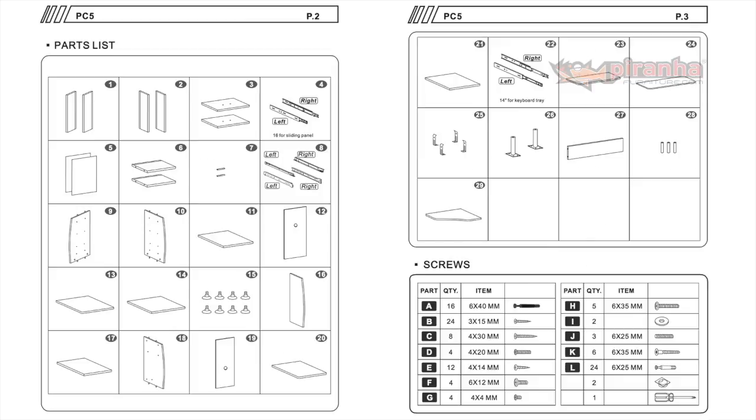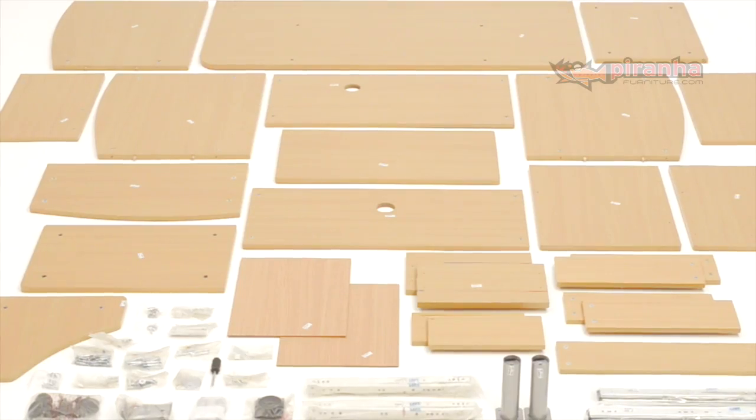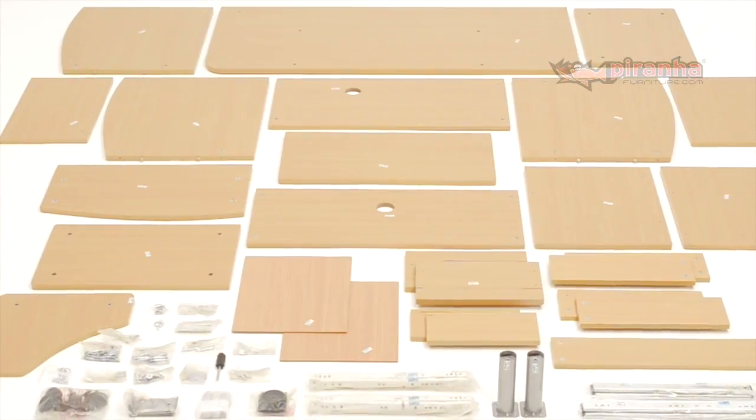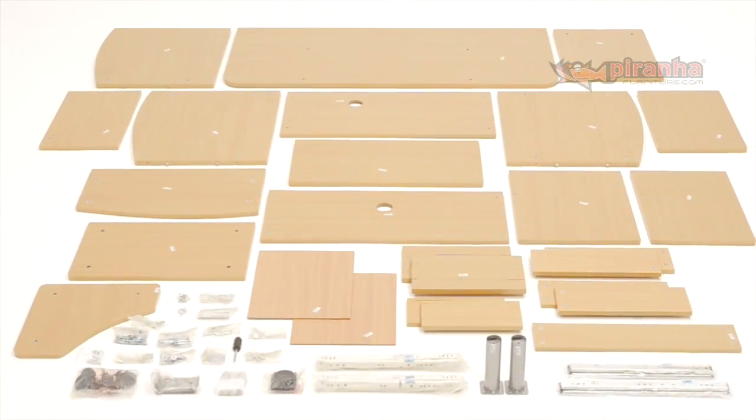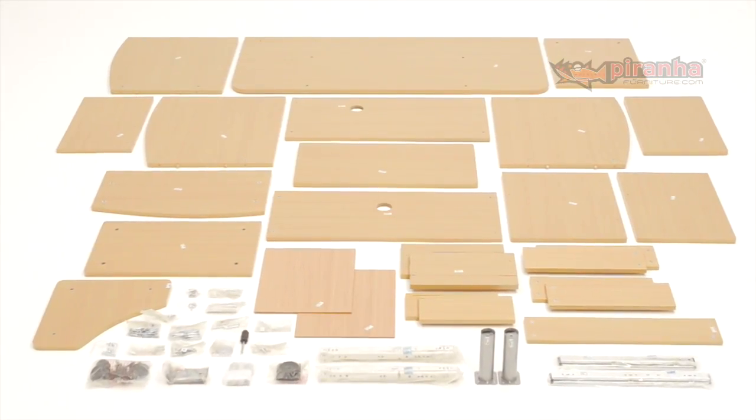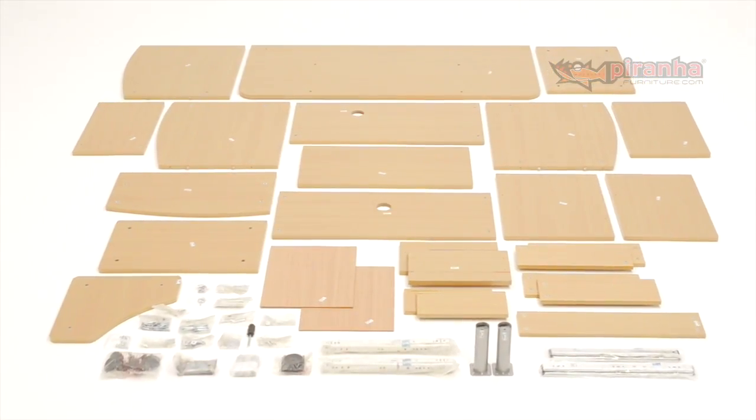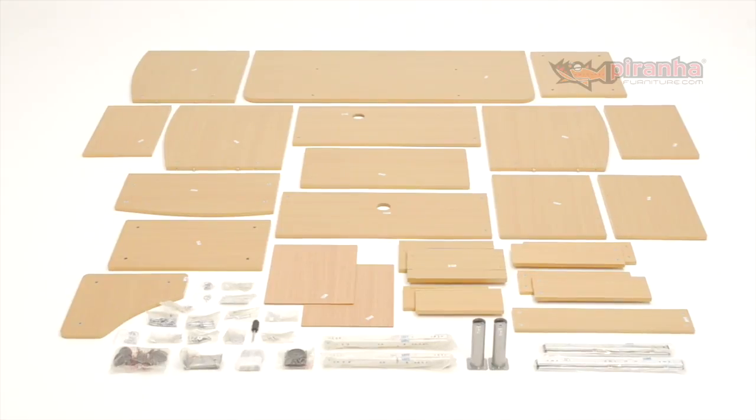Each part is numbered, so following the guide is fairly straightforward, but it is worth checking all the parts to make sure you have everything before you start. When parts are removed from the packaging, make sure they are placed on a clean, non-scratch surface, like some clean cardboard, polystyrene or carpet. This is particularly important for any parts that will be visible once the desk is finished.